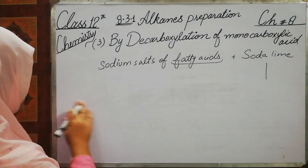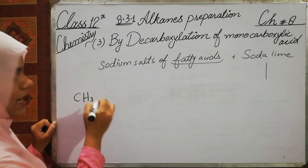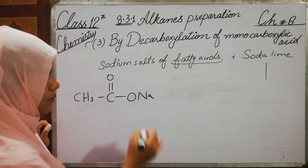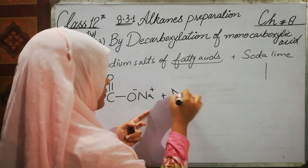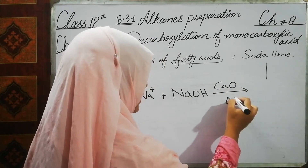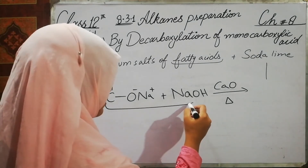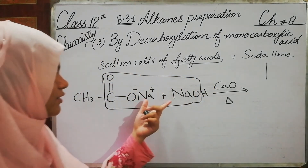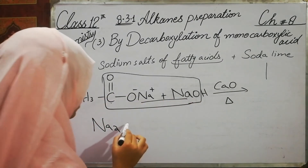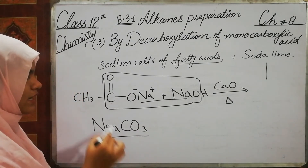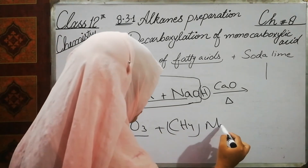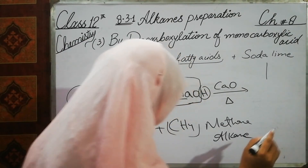The sodium salt reacts with Na2 and sodium oxide in the presence of calcium oxide at temperature. We treat 2 Na2CO3 — sodium carbonate — with CH3 and H combined. As a result, we get CH4, which is methane, and this is our alkane.